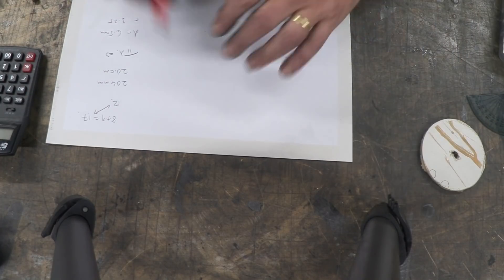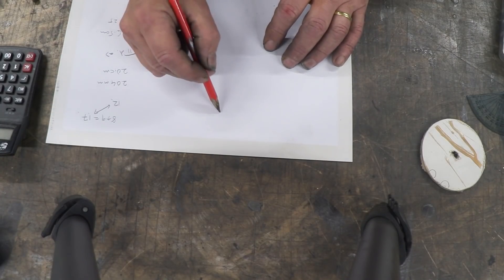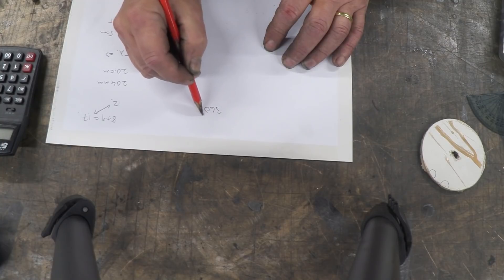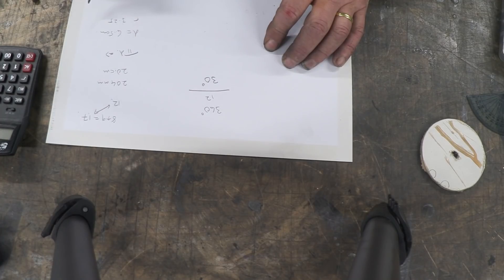Now if I've got 12 teeth around there, then I'm putting it evenly around and of course it's a circle. So it's 360 degrees I need to cover with 12 teeth. What that means is every 30 degrees I need to put a tooth.